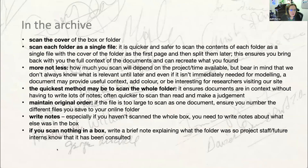Once you're at the archive, exactly what happens will depend on the arrangement there, but assuming you have boxes with folders inside, scan each folder as a single file with the cover of the folder as the first page. If you prefer to save as separate documents, you can, but personally I think it's a bit slower as you have to name and number each document individually to ensure they're kept in the right order. It's better to maximize time in the archive and split the documents later when preparing the spreadsheet of files to upload.